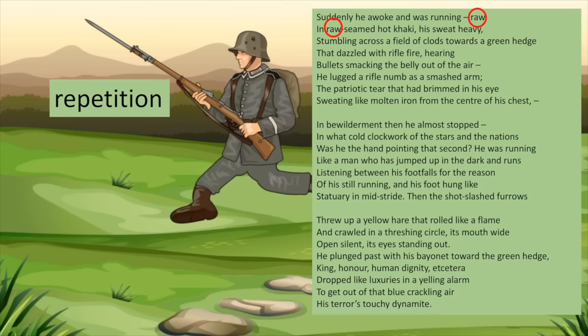Note the repetition in lines 1 and 2 of the word 'raw.' The idea of 'running raw' in 'raw-seamed hot khaki' reminds us of the Extract from the Prelude, with 'a huge peak black and huge.' If a student wrote this line in a piece of creative writing, their teacher might suggest they replace one use of 'raw' with a different word — the repetition is clunky and doesn't flow well. But the repetition reflects the shock the soldier has experienced, as if he's stuttering, struggling to articulate the moment, and the poet's repetition reflects that.